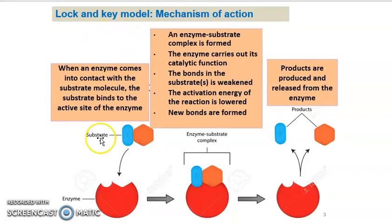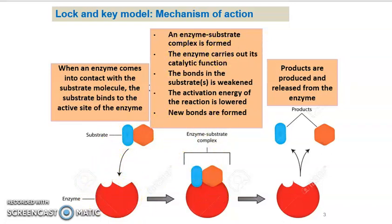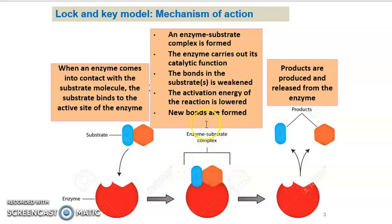This is the mechanism of enzyme action based on the lock and key model. When an enzyme comes into contact with the substrate molecule, the substrate will bind to the active site of the enzyme. An enzyme-substrate complex is formed. The enzyme will then carry out its catalytic function, and the bonds within the substrate will be weakened. The activation energy of the reaction is lowered.